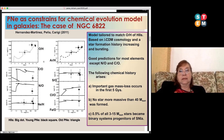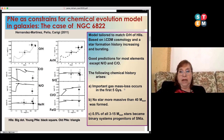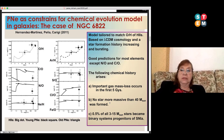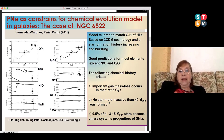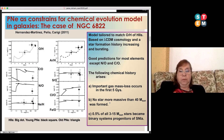From this type of models, we deduce that the chemical history of NGC 6822 is that an important gas mass loss occurred in the first five billion years of the galaxy's existence, that no star more massive than 40 solar masses was formed in this galaxy, and that 0.5% of all 3-to-15 solar mass stars become binary system progenitors of Type Ia supernovae.